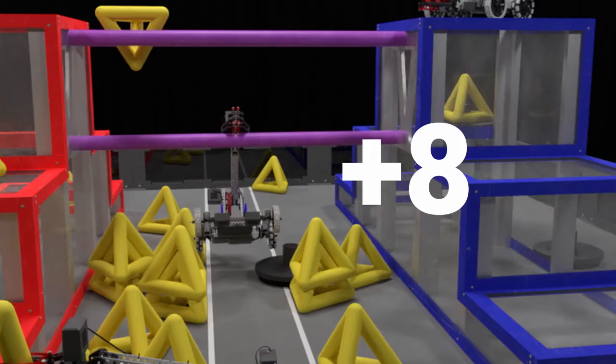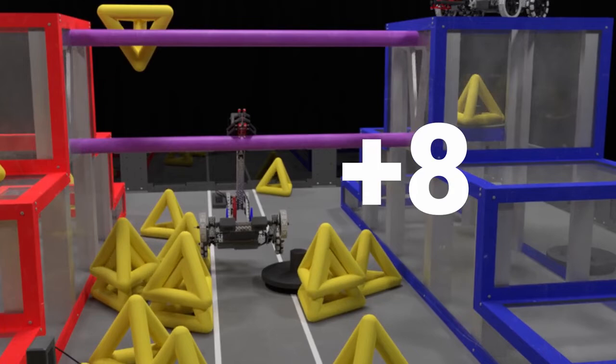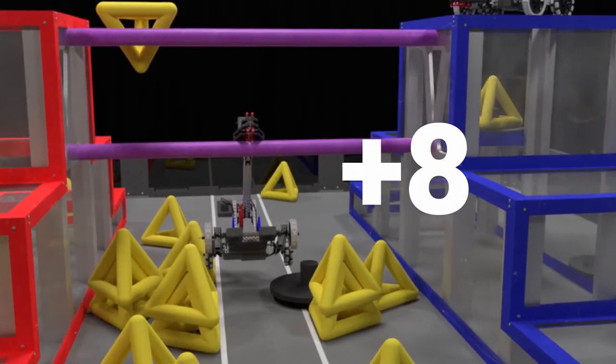For bridge hanging, a robot must be hanging on the bridge completely off the ground and will receive 8 points.